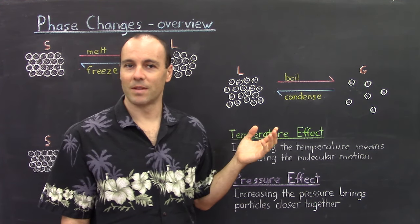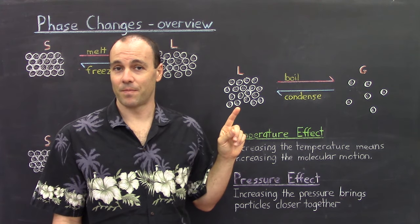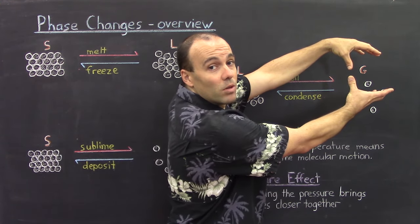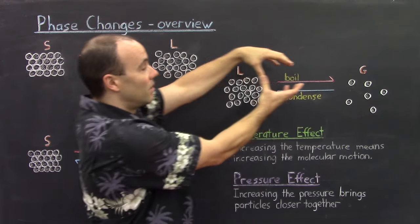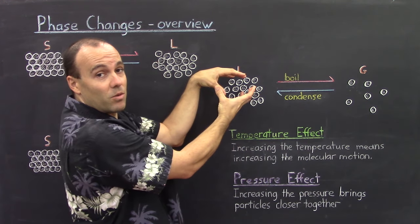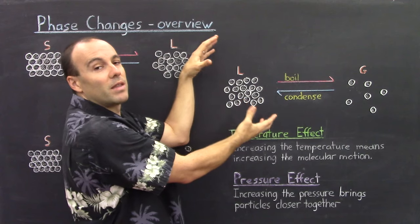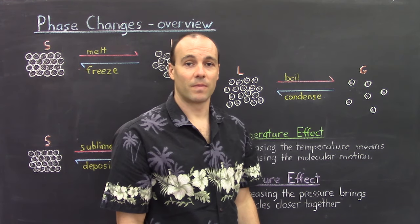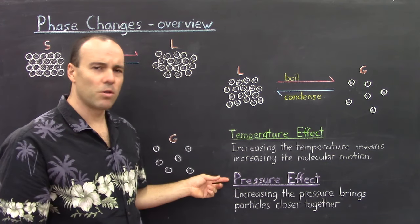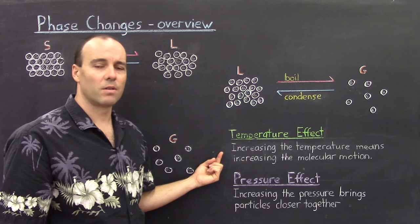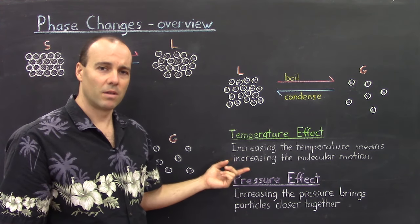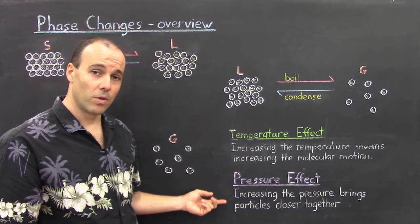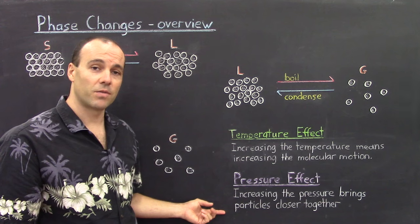So what are the pressure effects here? We discussed vapor pressure in our previous lecture. If you increase the surrounding pressure around the gas, you will cause the particles to become closer together and turn back into the liquid. And if you decrease the surrounding pressure around the liquid, you can cause vaporization to occur. So temperature and pressure both play a role here. When you increase the temperature, you're increasing the molecular motion, which can cause phase transitions. And as you increase the pressure, you're bringing particles closer together, which can also cause phase transitions.